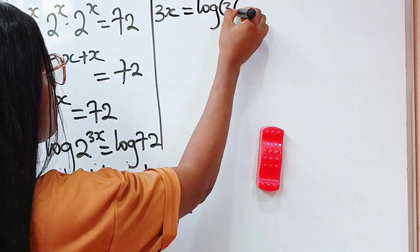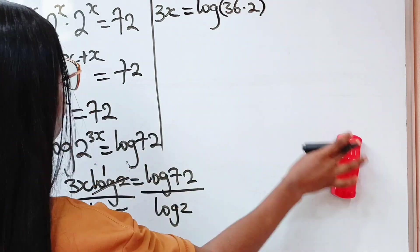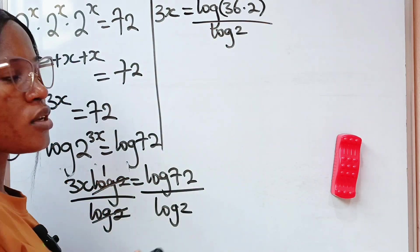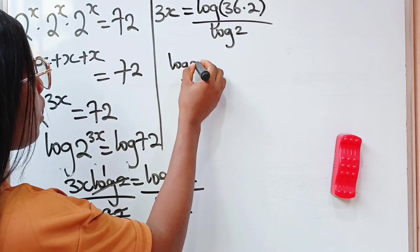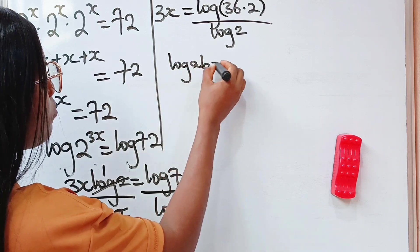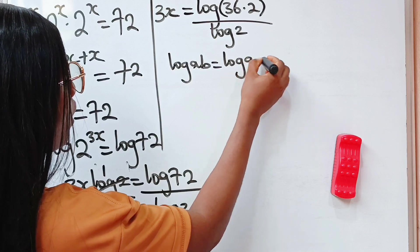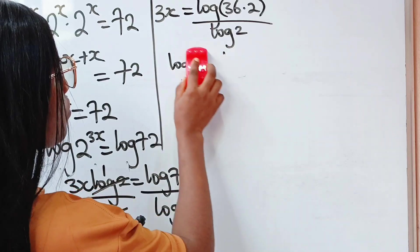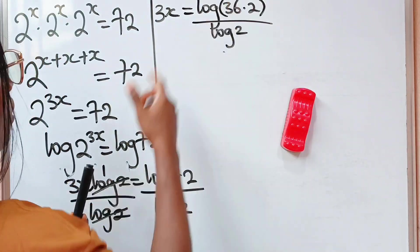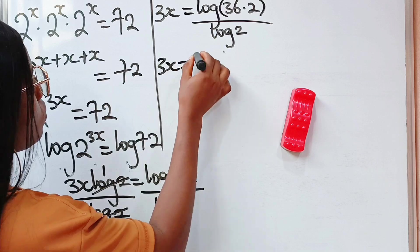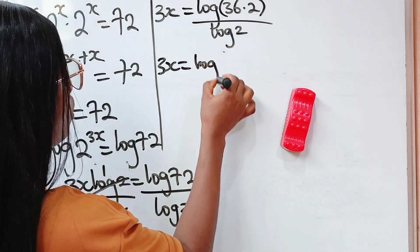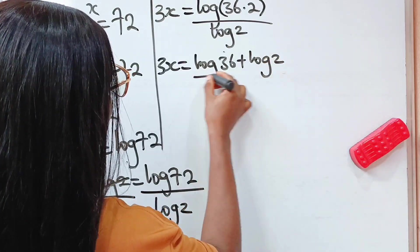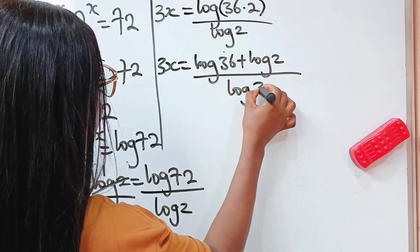Now, 72 is the same thing as 36 times 2, divided by log 2. Note that when you have log of a multiplied by b, this is equal to log a plus log b. So that means 3x is equal to log 36 plus log 2, both divided by log 2.